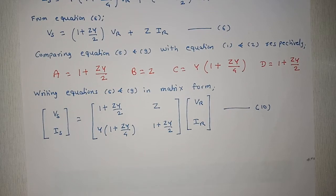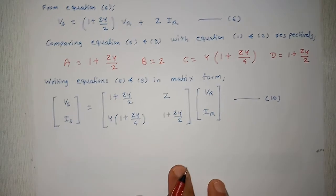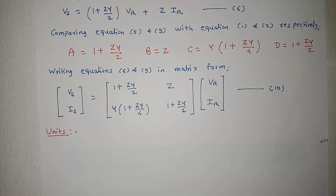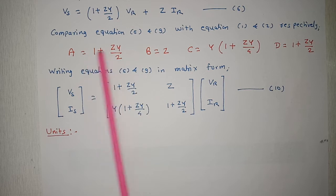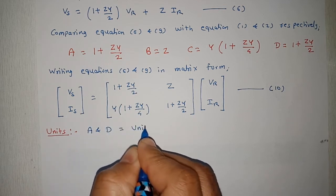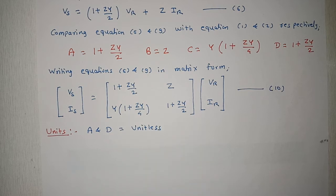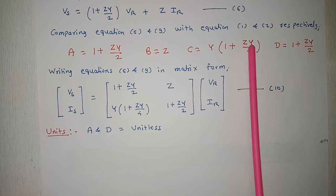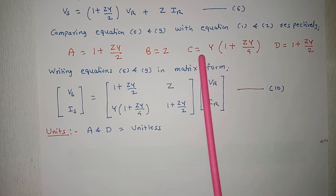We can check whether our answers are correct by comparing units. A and D should be unitless — since the units of Z and Y cancel, they are indeed dimensionless numbers. B should have units of ohms, which is correct since B = Z is an impedance. C should have units of Siemens — the units of Z and Y cancel, leaving only Y's unit of Siemens. So our values are correct.